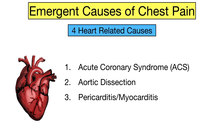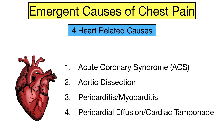Finally we have pericardial effusion, which is the accumulation of extra fluid in the pericardium around the heart, or cardiac tamponade, which is compression of the heart from too much fluid buildup around the heart. So the four heart-related causes are ACS, aortic dissection, pericarditis or myocarditis, and pericardial effusion or cardiac tamponade.